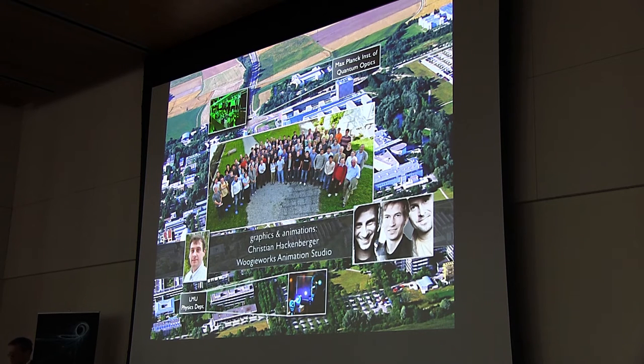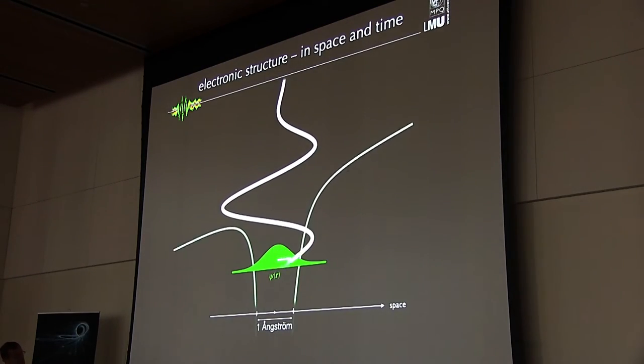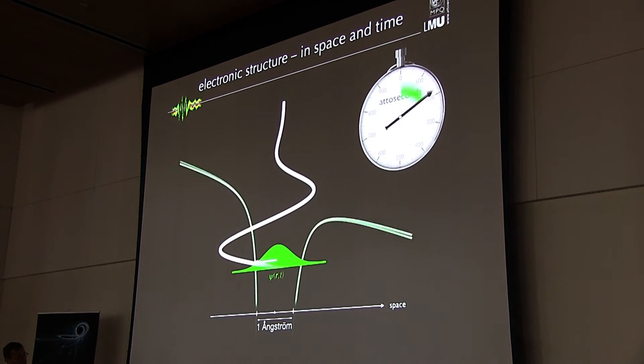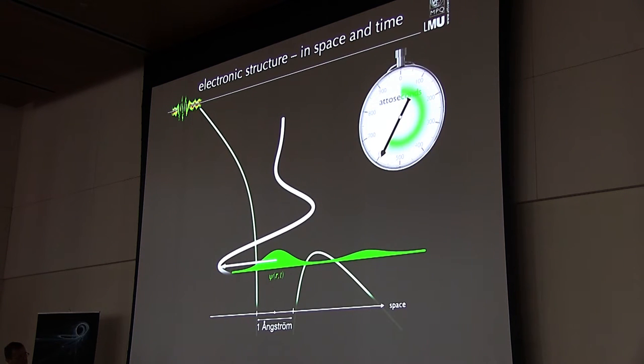Unfortunately, I don't have the time to name all of them, but I will name a few of them in the context of specific experiments. I would also like to thank Christian Hakenberger and Woogie Works Animation Studio for the graphics and animations in my talk. What you see here is how the electric field of a few cycle laser pulse suppresses the Coulomb potential, binding the electron of the hydrogen atom to the nucleus, and allow this electron to tunnel through this narrowed barrier. Direct access to the electronic structure of matter in space and its dynamic, fastest dynamic changes in time, here represented by optical field-induced tunnel ionization, requires a resolution of about 10 to the minus 8 centimeters and 10 to the minus 16 seconds.